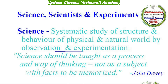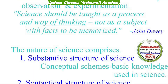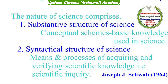John D.B. ने science को define किया है कि science should be taught as a process and way of thinking, not as a subject with facts to be memorized। Science का मतलब है एक ऐसा तरीका जिससे way of thinking को develop किया जा सके। Joseph Schwab ने science के दो components define किए हैं।